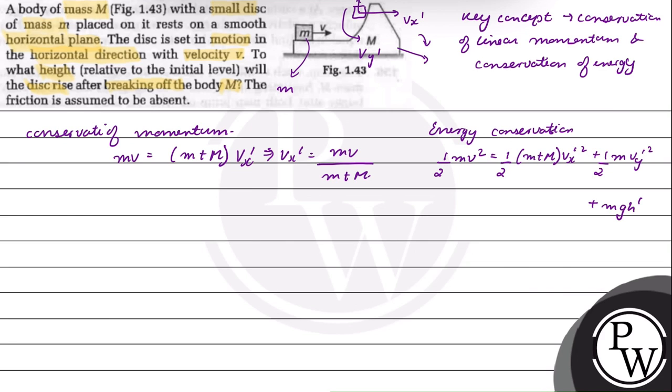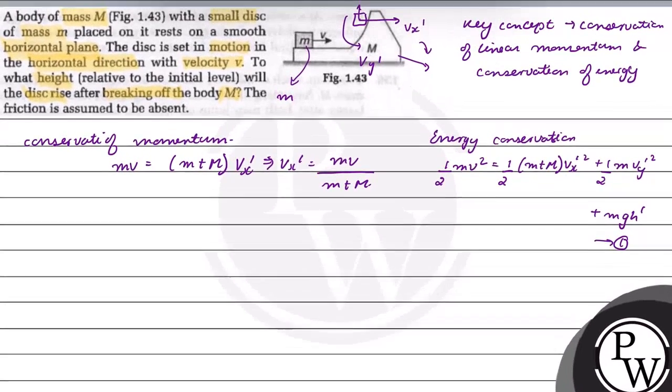Let us take this as equation number 1. In this equation, we put the value of vx-dash. So (1/2)mv² will be equal to (1/2)(m+M)vx-dash squared, which equals (1/2)(m+M)[mv/(m+M)]² plus (1/2)m(vy-dash)²